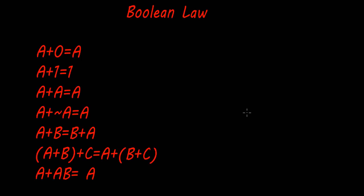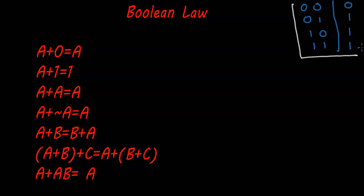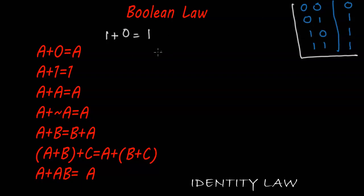Let's understand the first type of Boolean law. These laws follow the OR gate mechanism. The OR gate gives zero only when both inputs are zero, and for the rest of the inputs gives one. So a plus zero is equal to a. If a is one, then one plus zero equals one, and if a is zero, then zero plus zero equals zero.